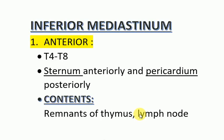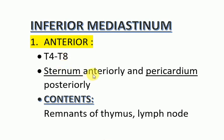Let us continue our topic of mediastinum. The second part is the inferior mediastinum, which is further divided into anterior, middle, and posterior mediastinum. The anterior mediastinum is from the level of T4 to T8 thoracic vertebra. Anteriorly, the sternum is present, and posteriorly, the pericardium. Contents are the remnants of thymus and lymph nodes.